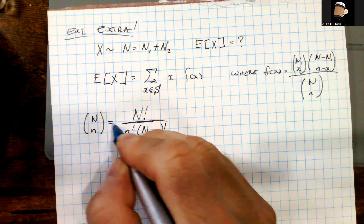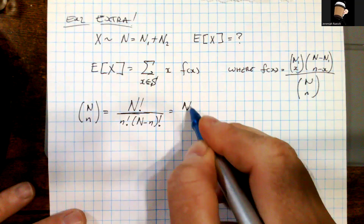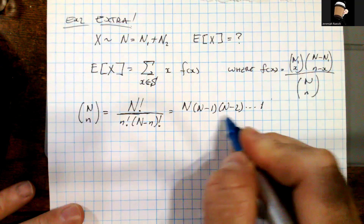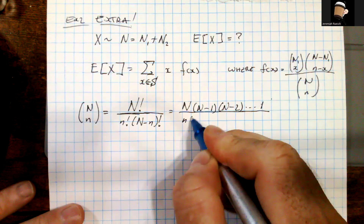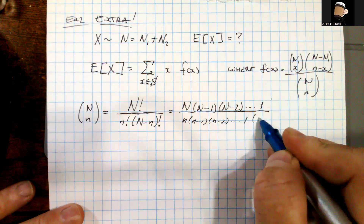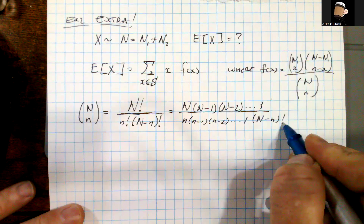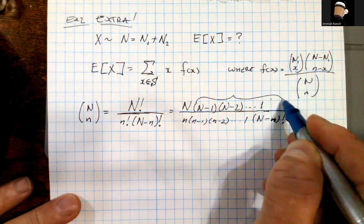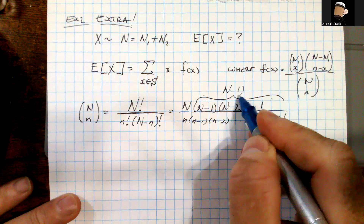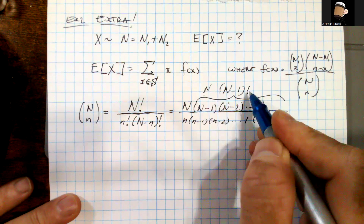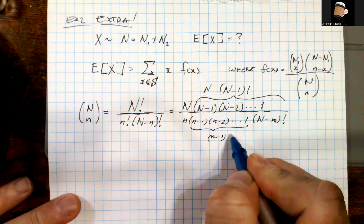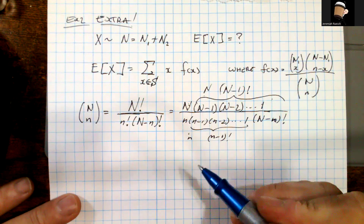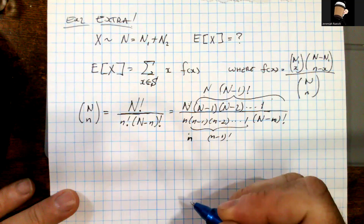There are a couple of details to note for the simplification of f(x). Recall that (N choose n) equals N! over (n! · (N−n)!). If we think about what the factorial means, we have N·(N−1)·(N−2)···1 divided by n·(n−1)···1 times (N−n)!. Notice that n·(n−1)! equals n·(n−1)!, and similarly this gives us (n−1)! times n. This allows us to factor out a ratio of N to n, which we will use in our calculation.